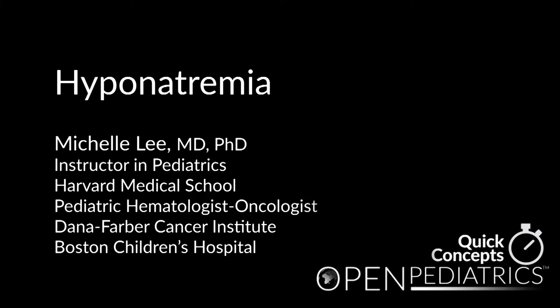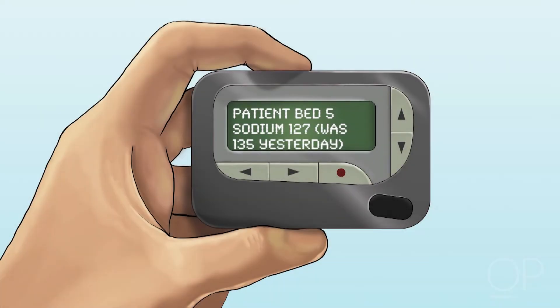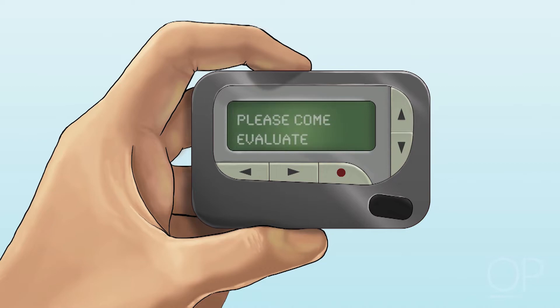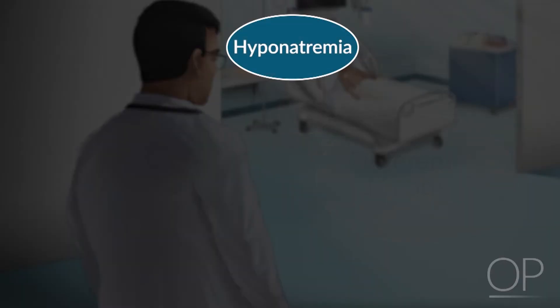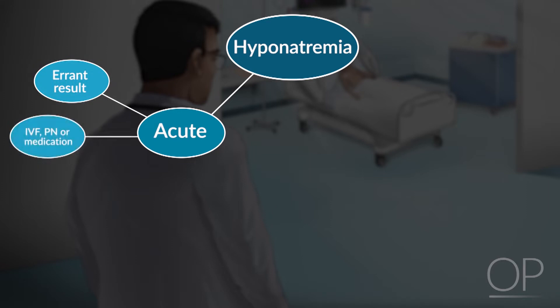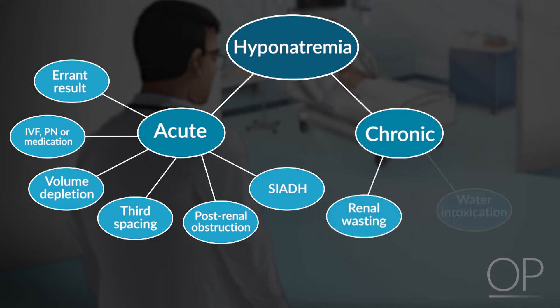Hyponatremia, by Dr. Michelle Lee. The nurse pages: the patient's sodium is 127. It wasn't that low yesterday. Can you come to look at him? In your mind, you consider the causes of hyponatremia. Acute causes could include an errant result, IV fluid or parenteral nutrition or medications, volume depletion, third spacing, or SIADH. You also consider chronic causes like renal wasting and water intoxication.